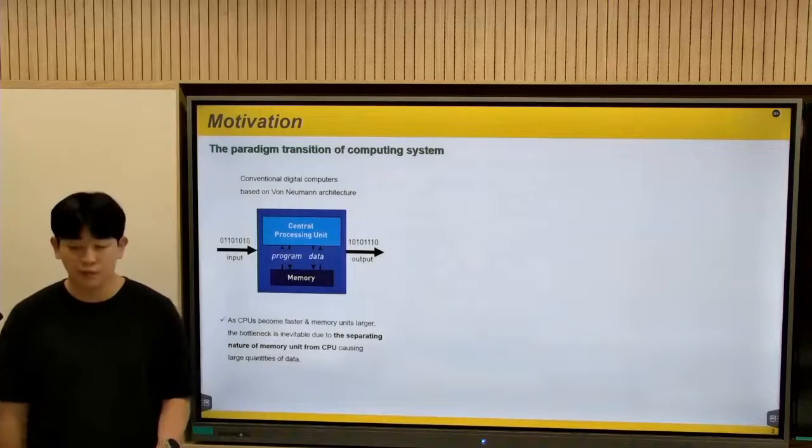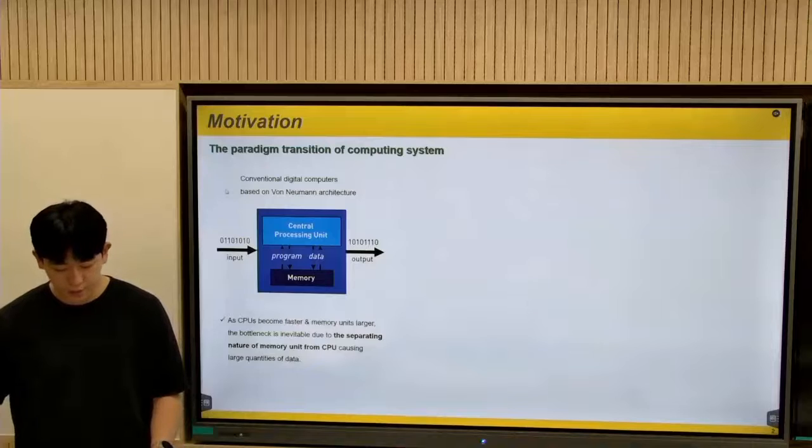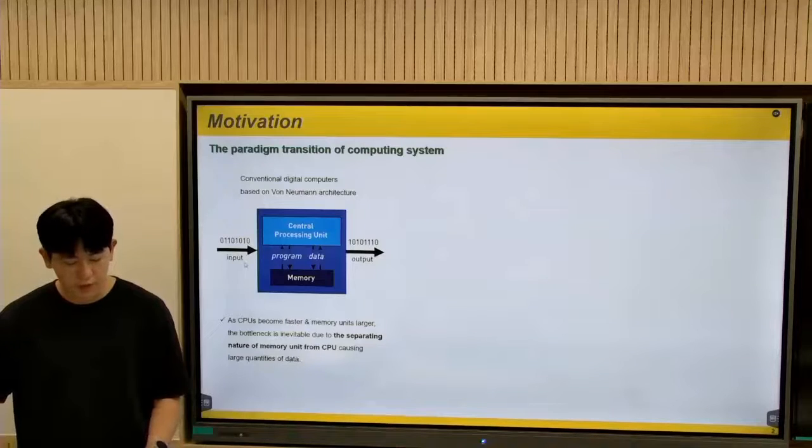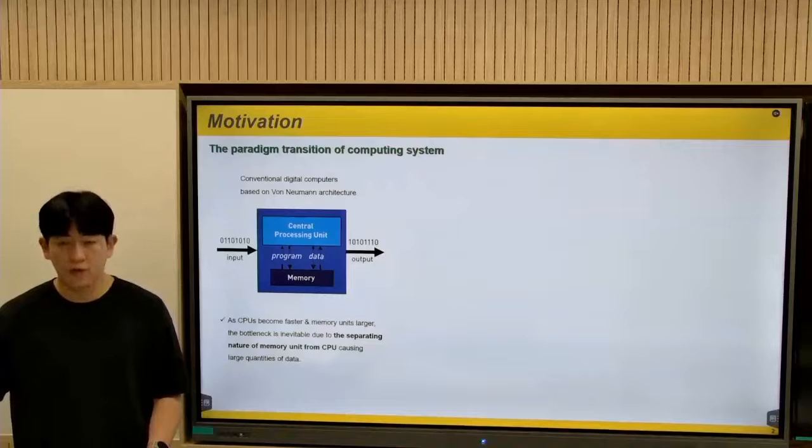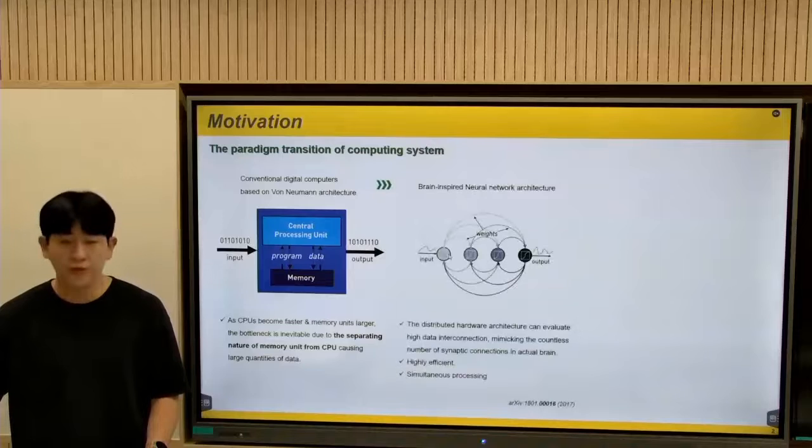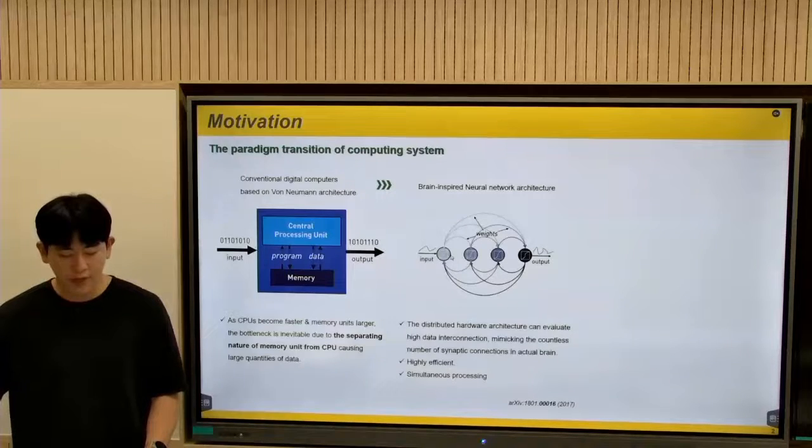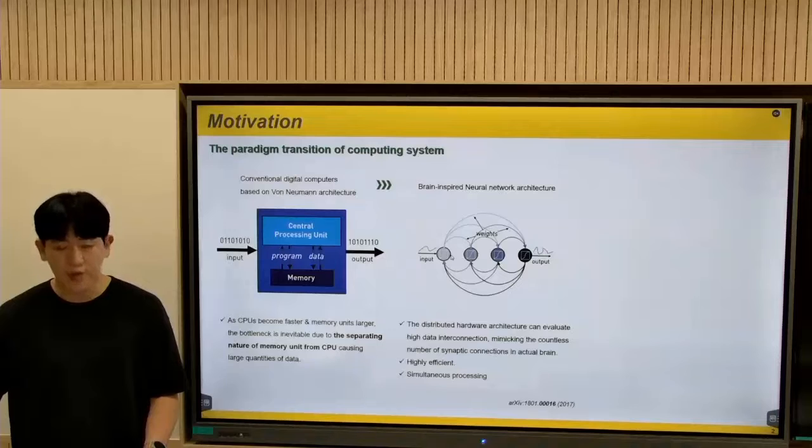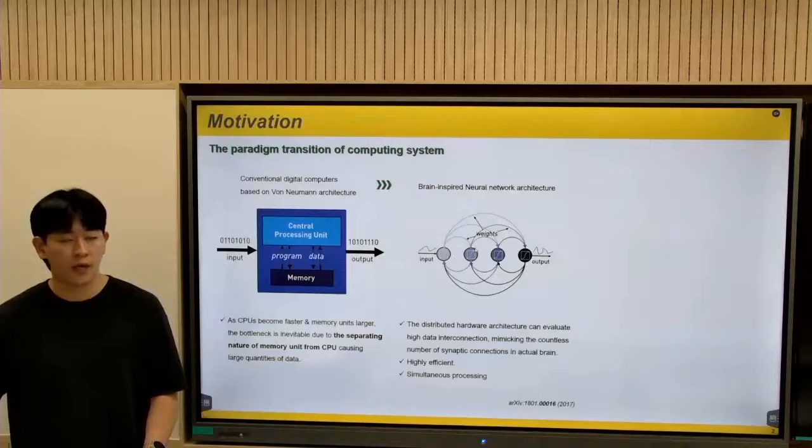Firstly, the motivation. Previously, as you can see the image here, the paradigm for implementing digital computer system was conducted by the famous von Neumann architecture, where memory unit and the CPU are physically separated, which causes bottleneck related to huge data. For this reason, there has been intense attempts to mimic brain-inspired neural network system because of its simultaneous and highly energy-efficient processing nature.